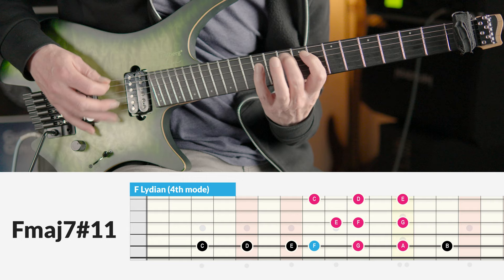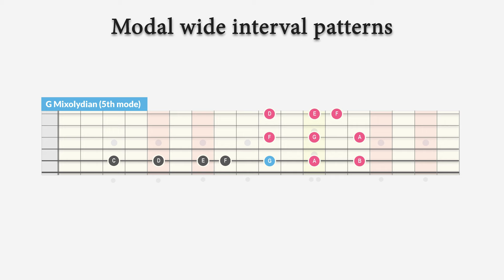Now we find the G mixolydian mode on the fifth note of the C major scale. It's the G major scale with a minor 7 degree, the note F. And we'll play this over a G dominant 7 chord.